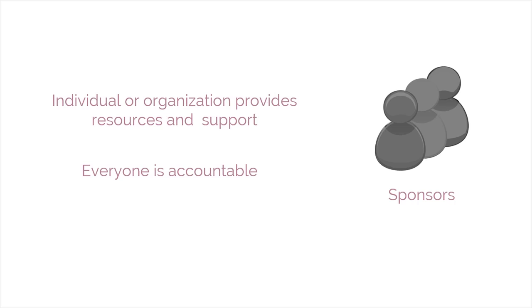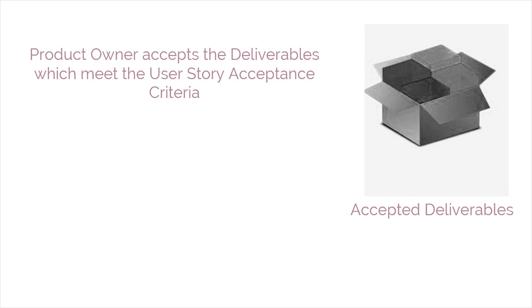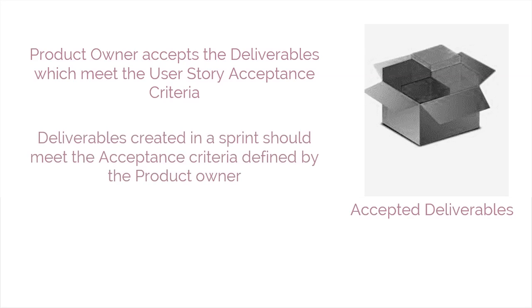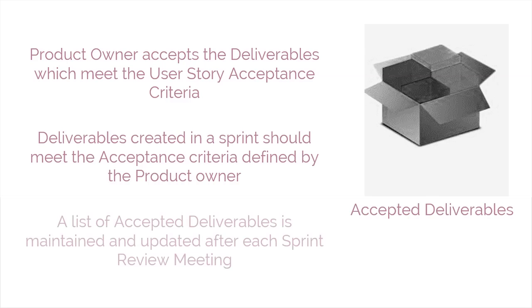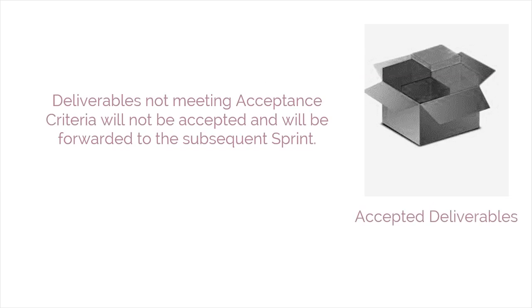The next source of input is accepted deliverables. Deliverables which meet the user story acceptance criteria are accepted by the product owner. The objective of a sprint is to create potentially shippable deliverables or product increments which meet the acceptance criteria defined by the customer and product owner. A list of accepted deliverables is maintained and updated after each sprint review meeting. If a deliverable does not meet the defined acceptance criteria, it is not considered accepted and will usually be carried forward into a subsequent sprint to rectify any issues — this is highly undesirable because the objective of every sprint is for deliverables to meet the criteria for acceptance.